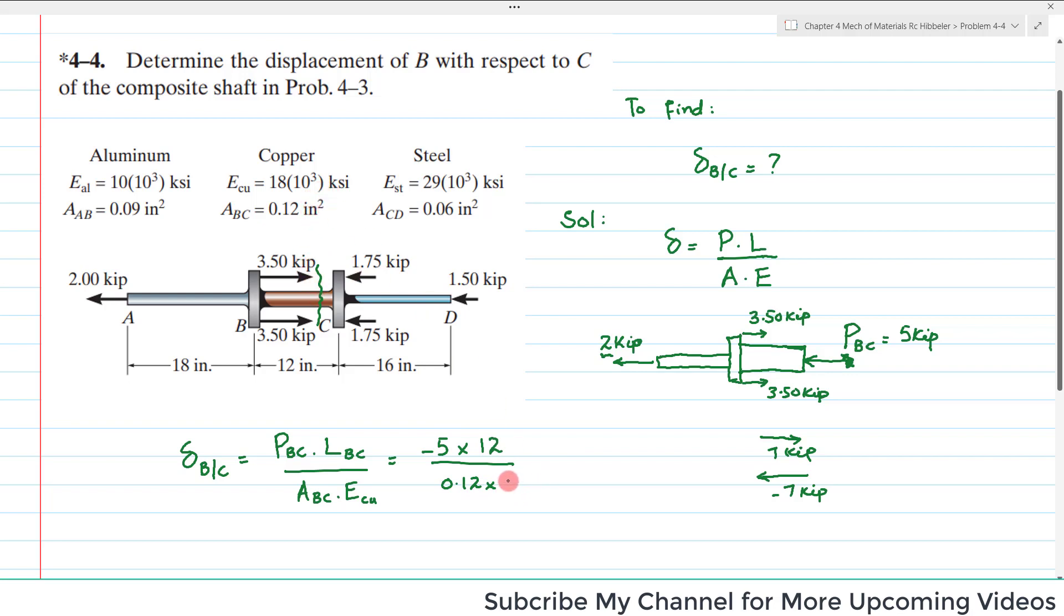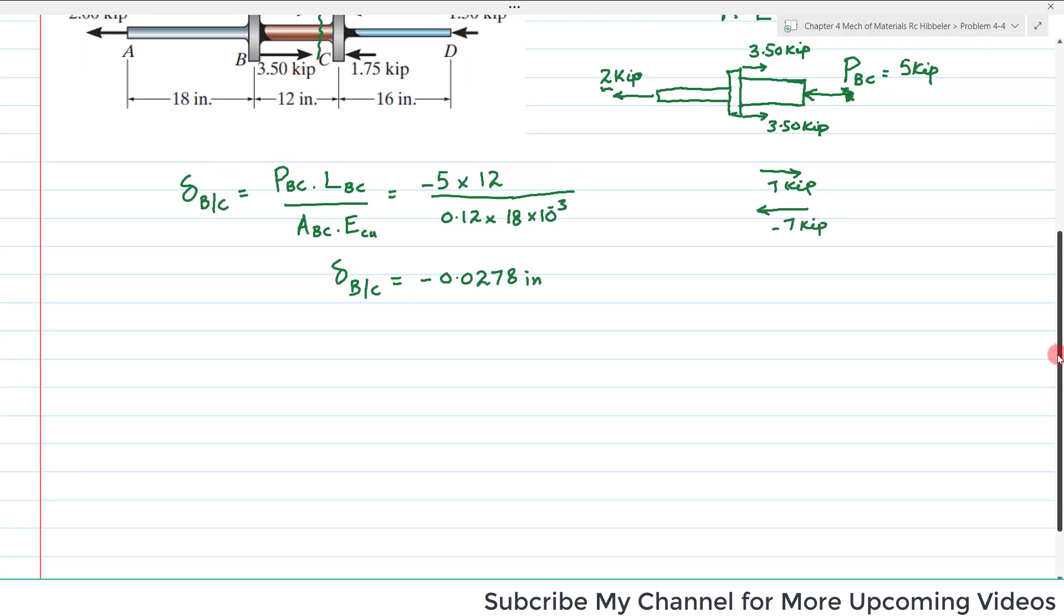So displacement of point B with respect to C comes out to be minus 0.0278 inches. Now what does this minus sign show?